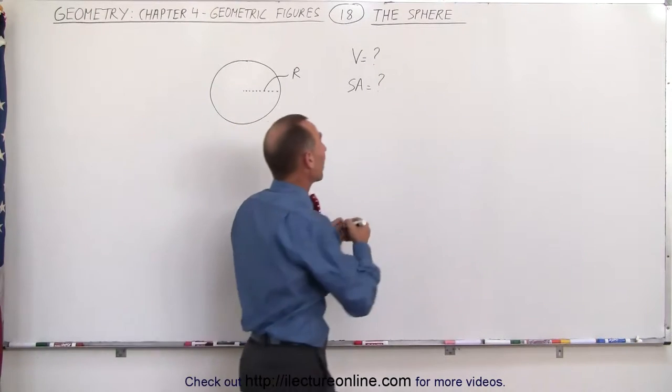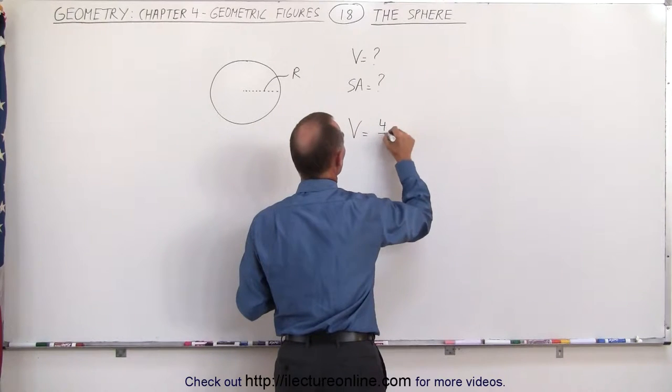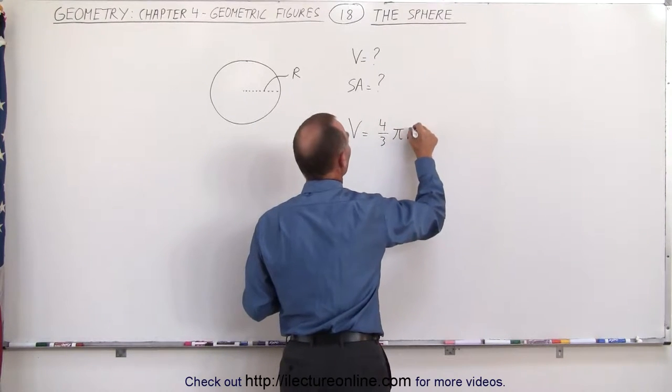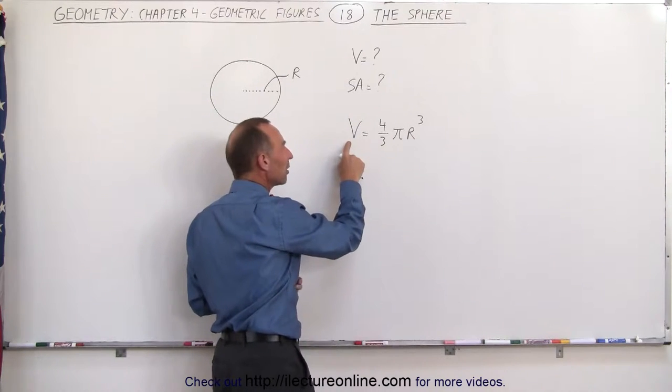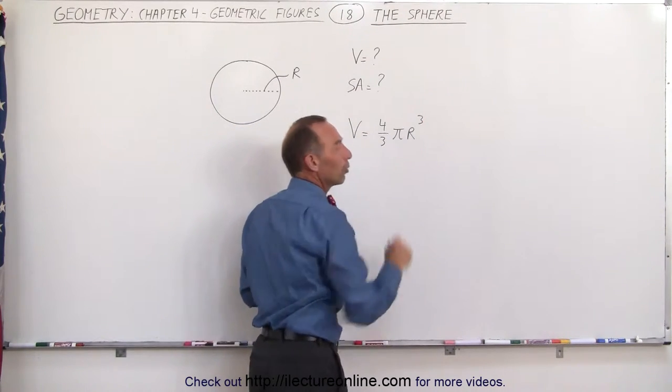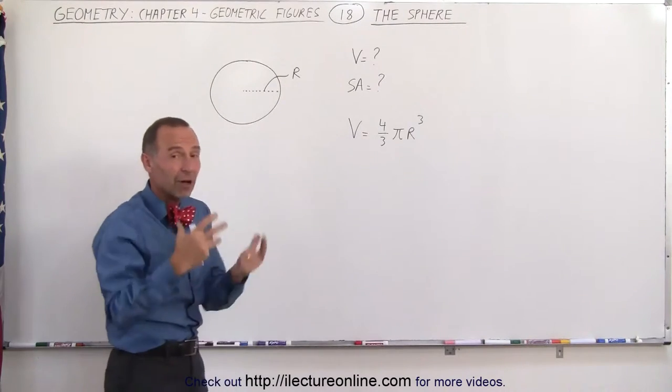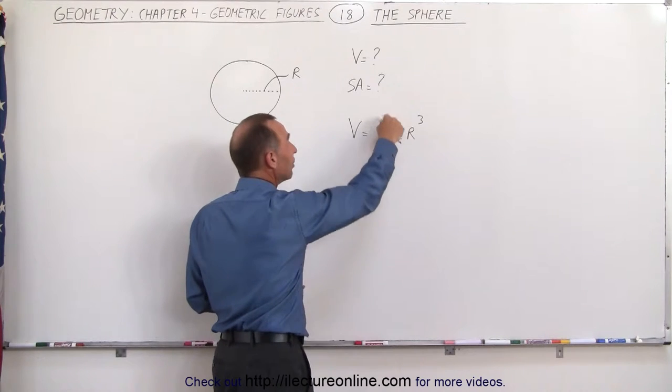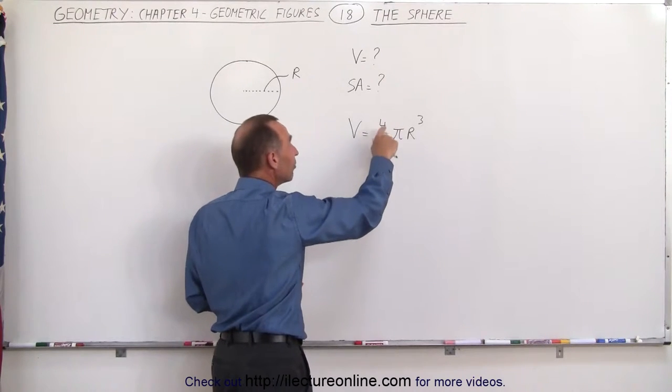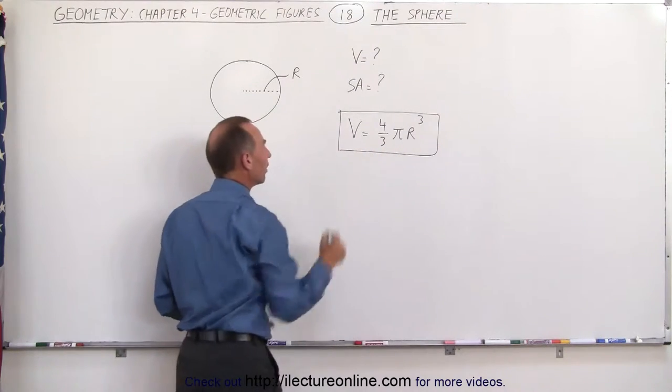But for the volume, it turns out the volume of a sphere is equal to four-thirds pi r cubed. First of all, since it's volume, we would expect r raised to the third power. We want to see a cube there because we're talking about the volume, and typically volumes are related to cubes. We do want to have the pi there, and the fraction in front is four-thirds. So this is the volume of a sphere.